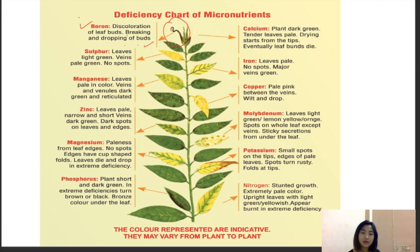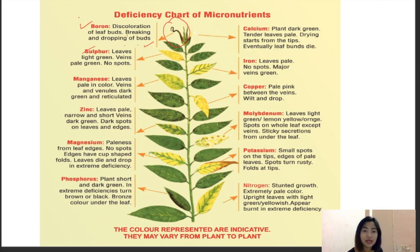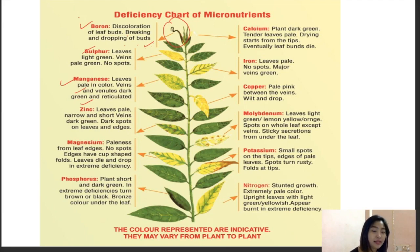Manganese deficiency: leaves are pale in color, but veins and venules remain dark green. In zinc deficiency, leaves are pale, narrow, and short with dark green veins, dark spots on leaves and at edges. For manganese (leaf scorch): paleness starts from leaf edges, no spots, edges have cup-shaped holes, and leaves die and drop in extreme deficiency. Phosphorus deficiency: plants are short and dark green; in extreme deficiency, leaves turn brown or bronze color underneath.